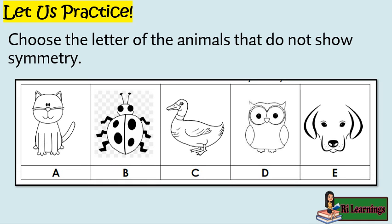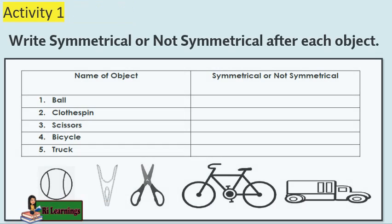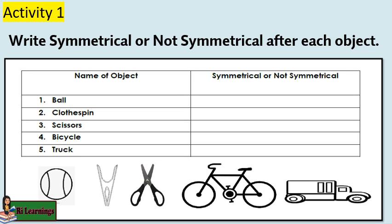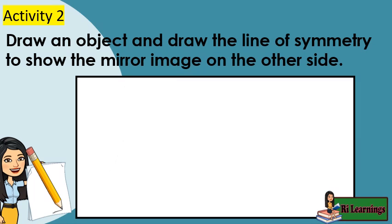Let us practice. Choose the letter of the animals that do not show symmetry. Activity 1: Write symmetrical or not symmetrical after each object. Activity 2: Draw an object and draw the line of symmetry to show the mirror image on the other side.